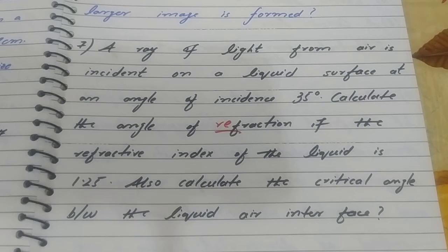Question seven: A ray of light from air is incident on a liquid surface at an angle of incidence 35 degrees. Calculate the angle of refraction if the refractive index of the liquid is 1.25. Also calculate critical angle between liquid and air interface.